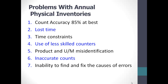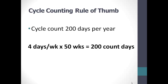Can you achieve that by doing an annual physical? Of course not, because there are a lot of problems with an annual physical inventory. You have to count every stick, stone, and blade of grass in the building, and you find nationally, statistically, count accuracy of only about 85%. You lose a lot of time, you have to shut down to do it, there are time constraints, and that forces you to use less skilled counters who will make mistakes with product identification and units of measure. The worst thing is that because the audit trail is so long, you can't figure out what caused the disconnect between the shelf count and the record count. A better way of doing it, and a way to actually get rid of the annual physical, is to do cycle counting.